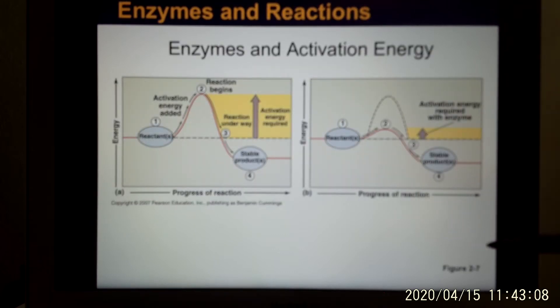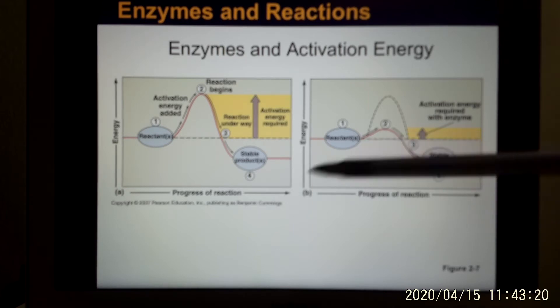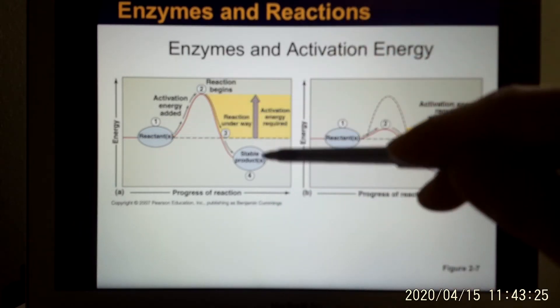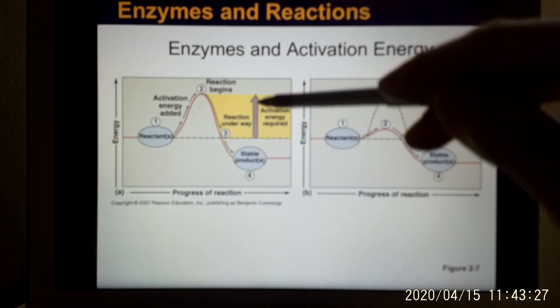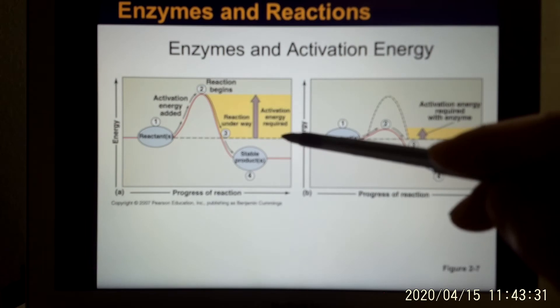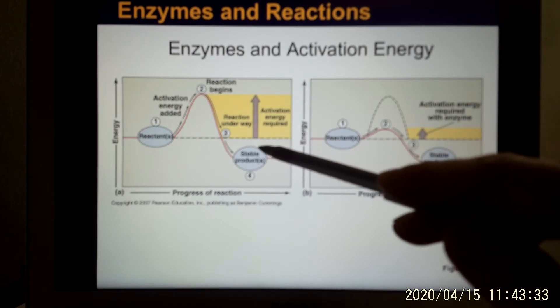In your body, you use the enzyme to help you for the chemical process. In unit 5, when we talk about the digestive system, you will learn we have a lot of digestive enzymes. So you have the reactant, you have the product, and to make this chemical process happen, you need to overcome the energy gap, you need to give them energy. That's why in a chemical lab, usually you give them fire, you give them heat to make this process happen.